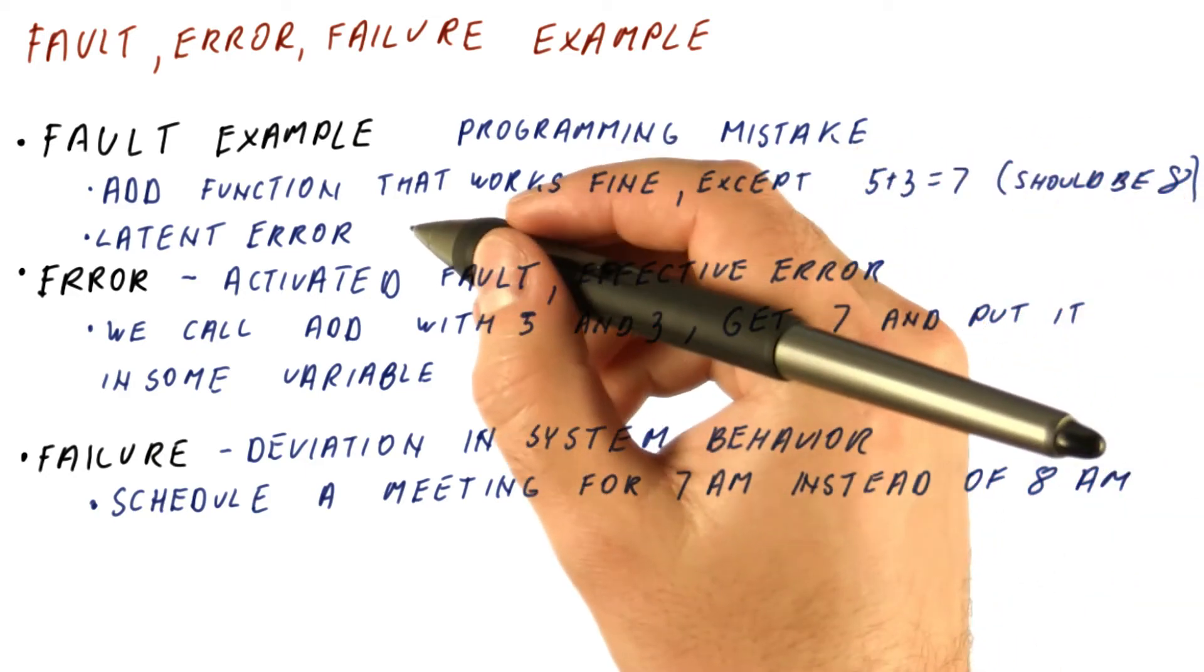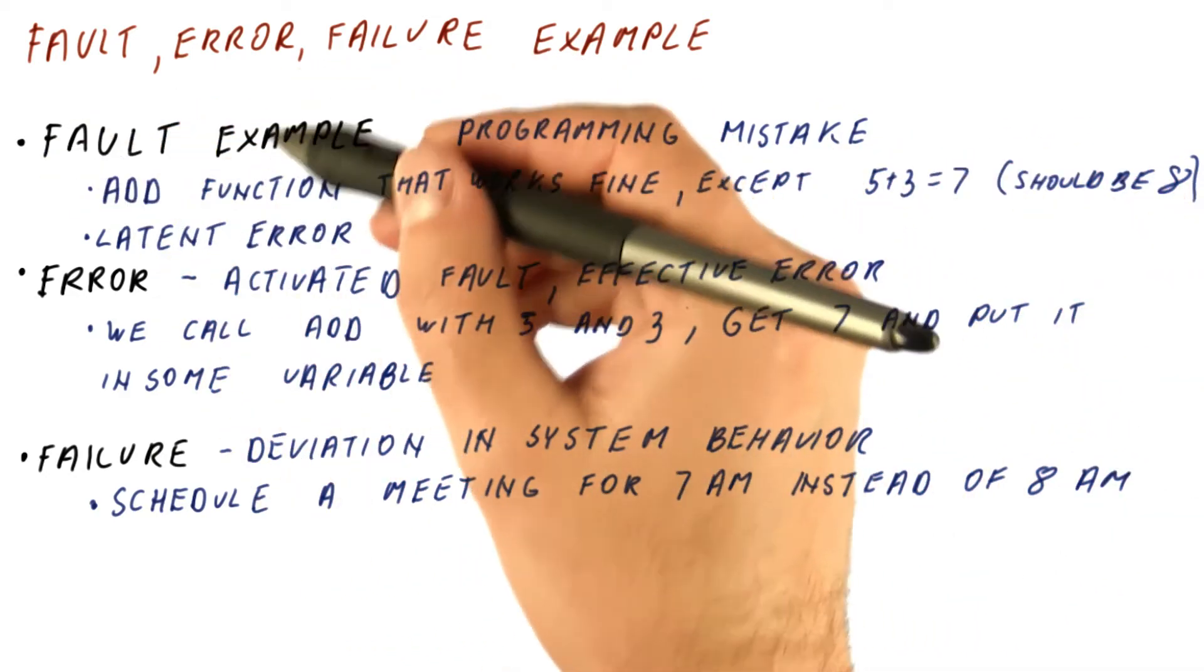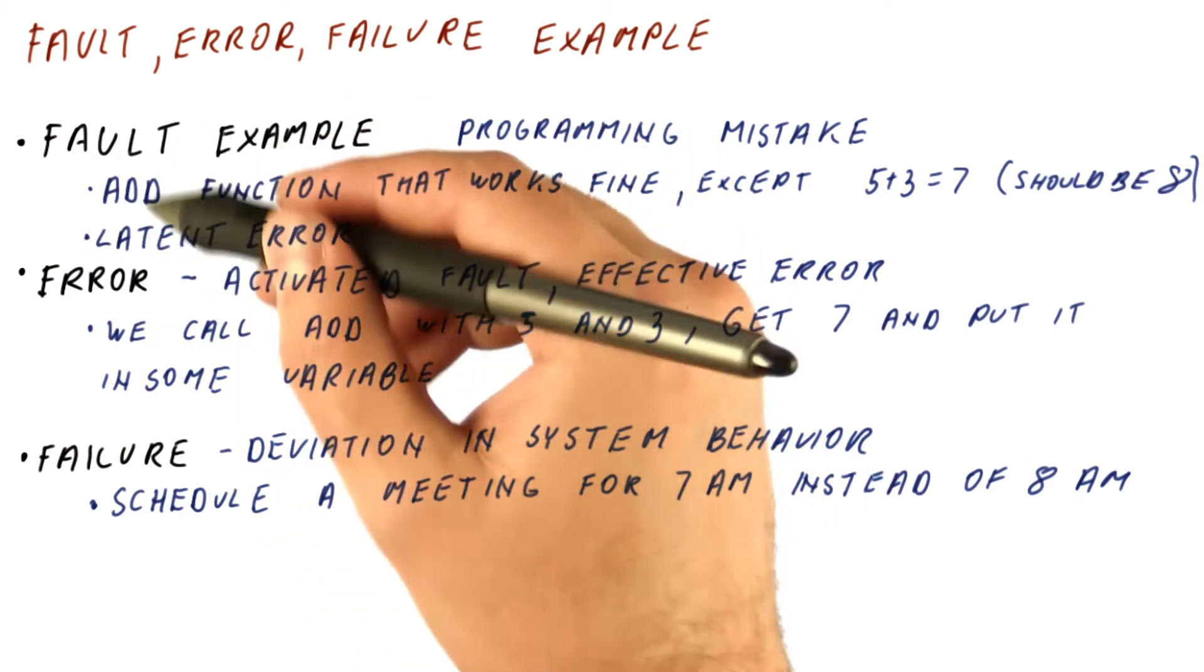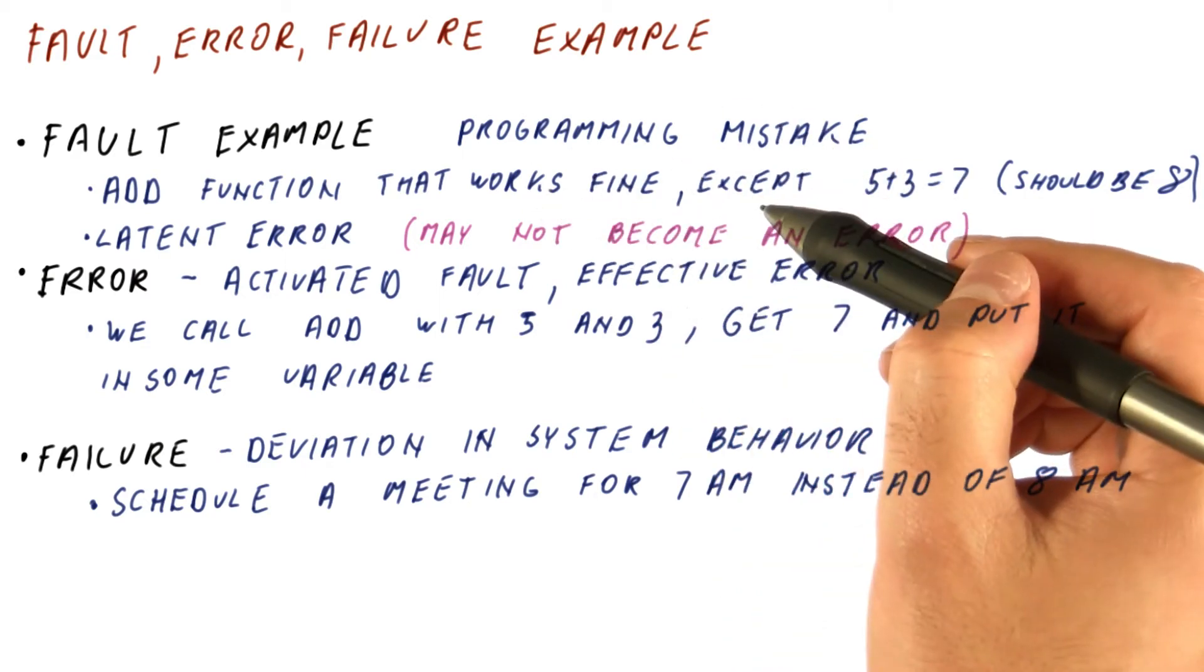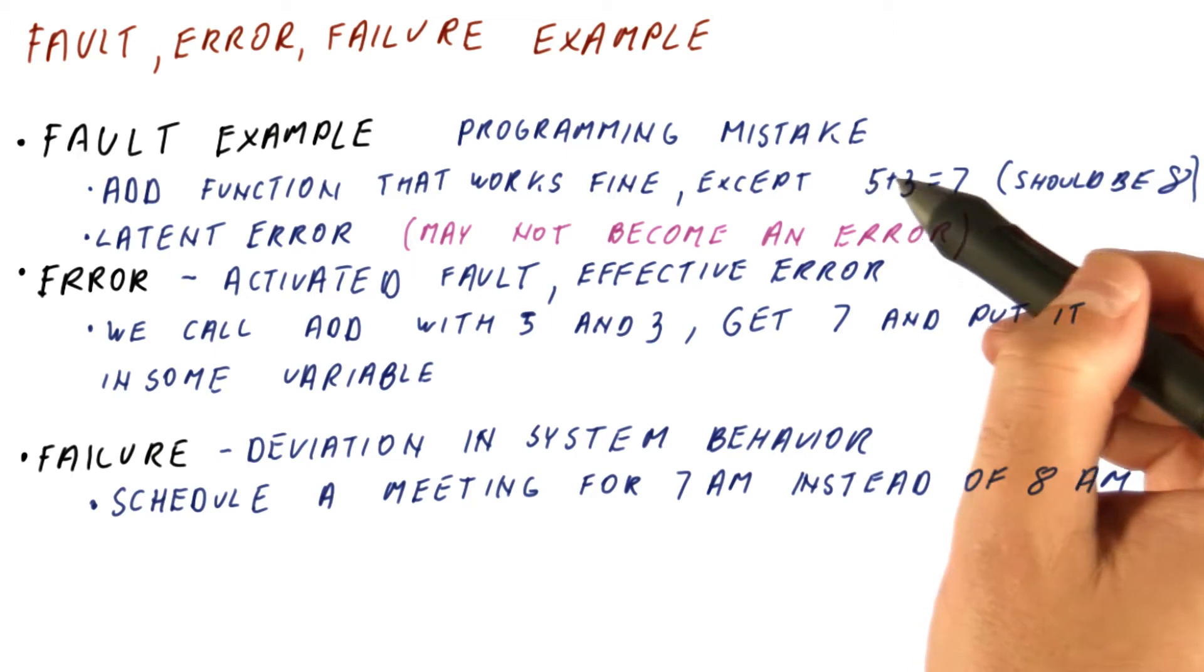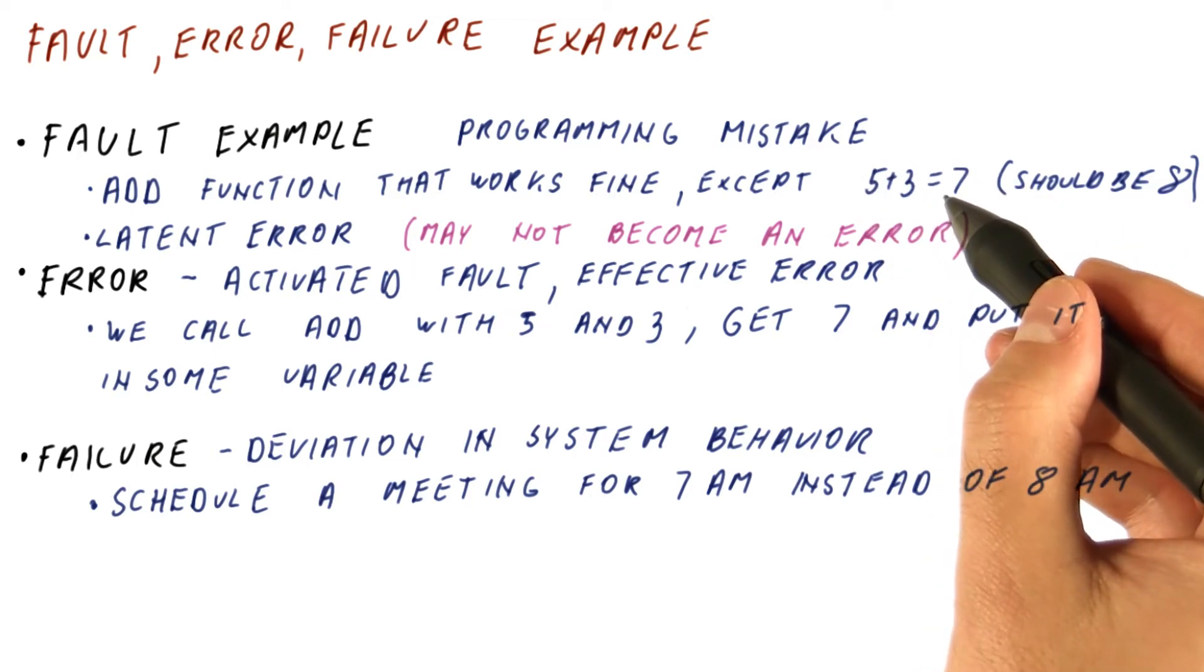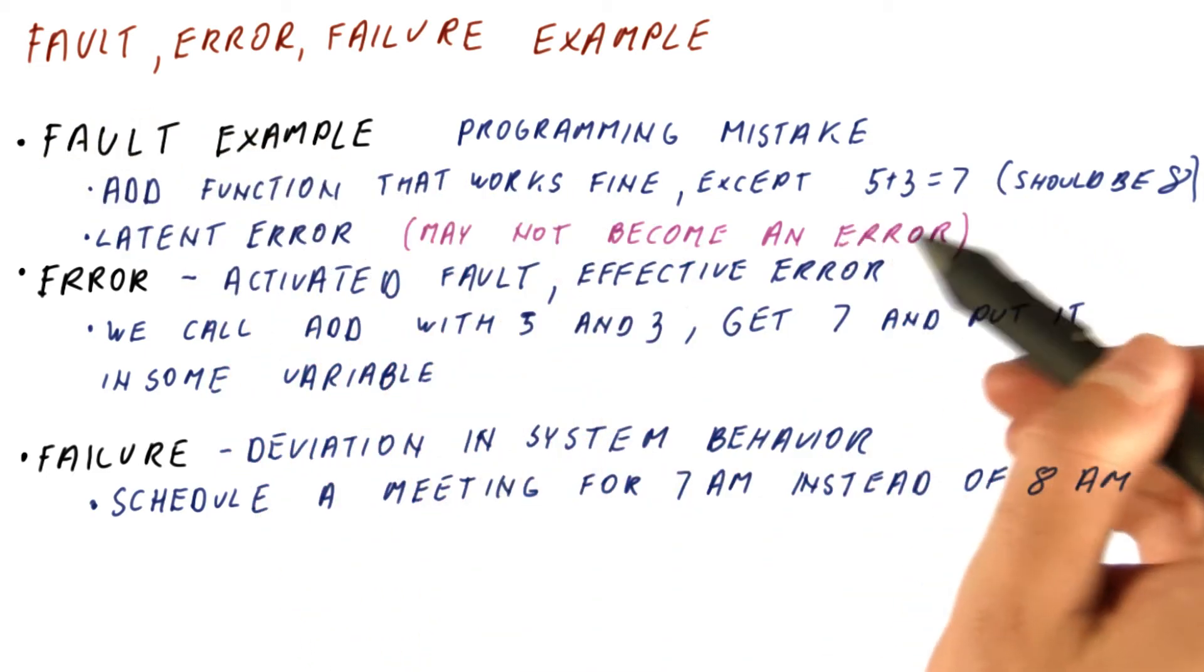It is important to note here that you need a fault of some sort in order to get an error, but not every fault becomes an error. For the fault of this type, for example, to become an error, it needs to be activated. We need to actually use the function in a way that makes it produce incorrect results, even though it always had the fault. It always was faulty in this way.